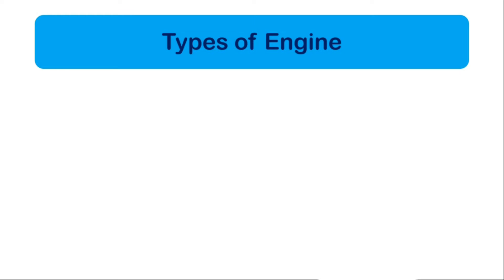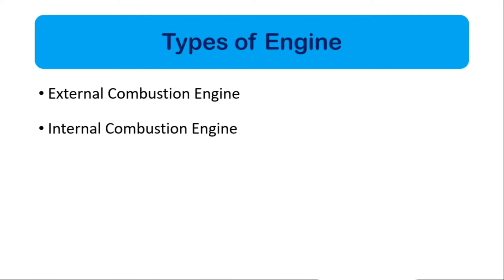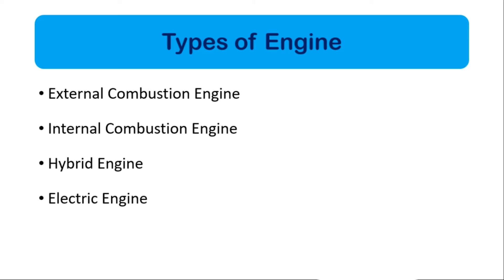Types of automobile engines: there are mainly four types of engines. They are external combustion engine, internal combustion engine, hybrid engine, and electric engine. Let's see all these four types of engines in detail, one by one.